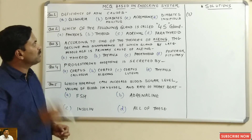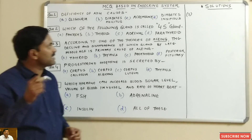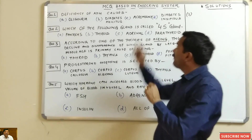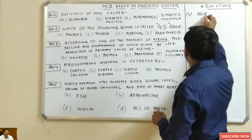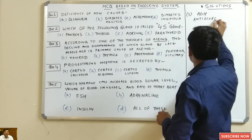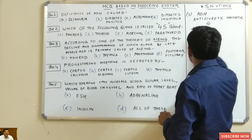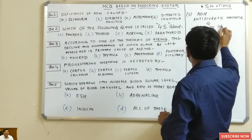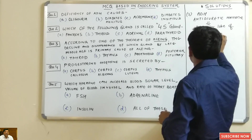Hello students, today we will be talking about MCQs based on the endocrine system. The very first question is: deficiency of ADH causes what? First of all, you must know the full form of ADH — it means anti-diuretic hormone, and this hormone is released by the posterior lobe of the pituitary.